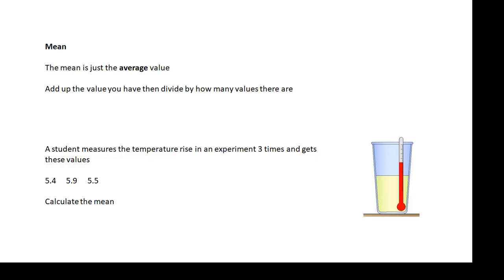A student measures the temperature rise in an experiment three times and gets those values. Calculate the mean. So get your calculator out, get it done and the mean is 5.6. Be careful with how many decimal places you use. In general it should match the data that you're given. Again, common sense. But calculating the mean is dead easy.